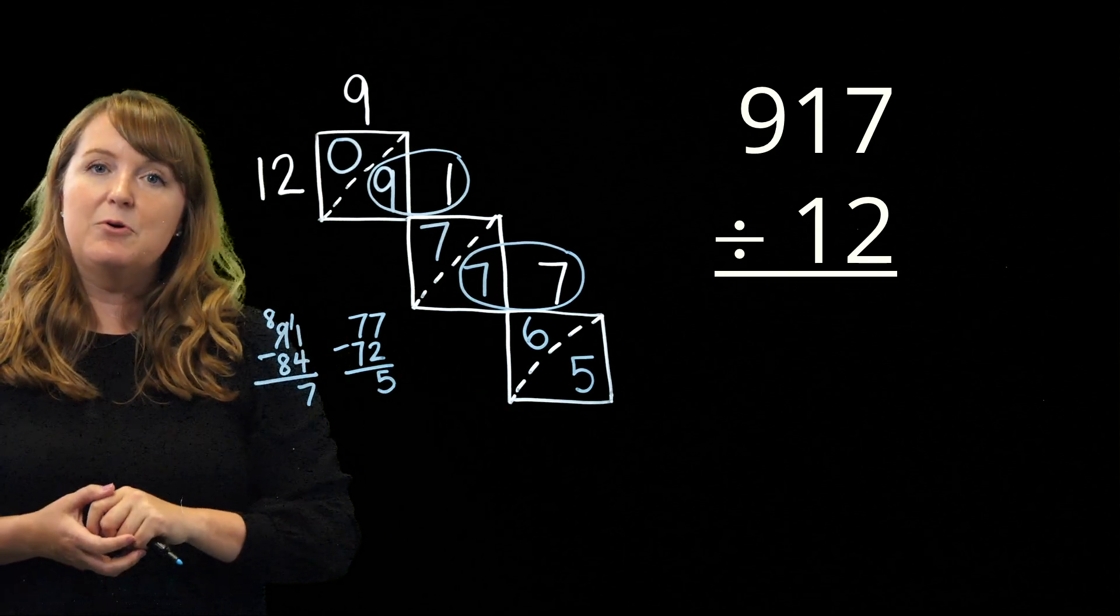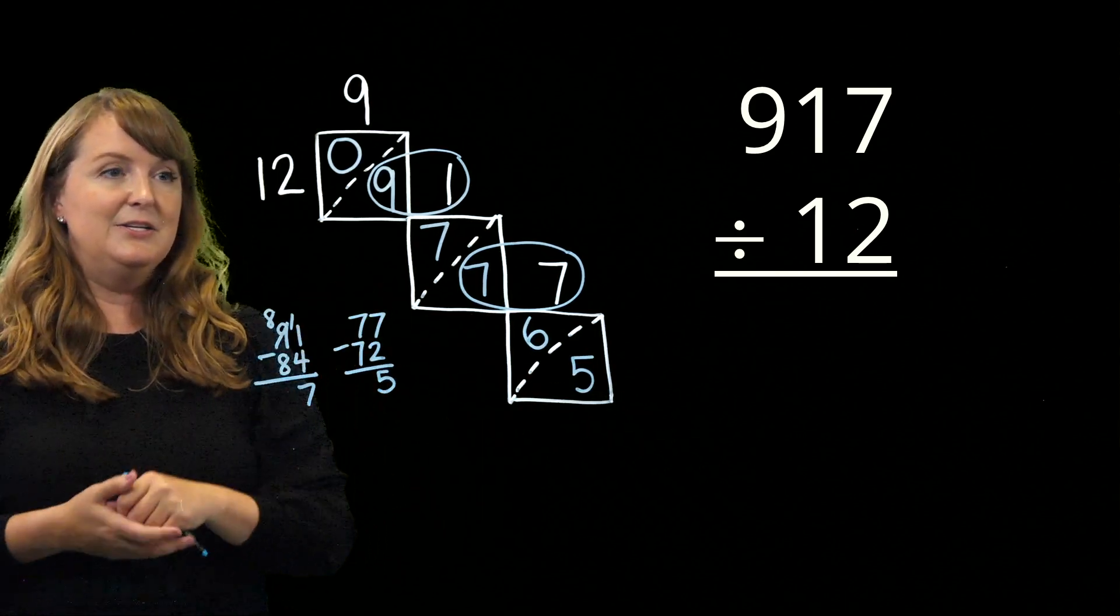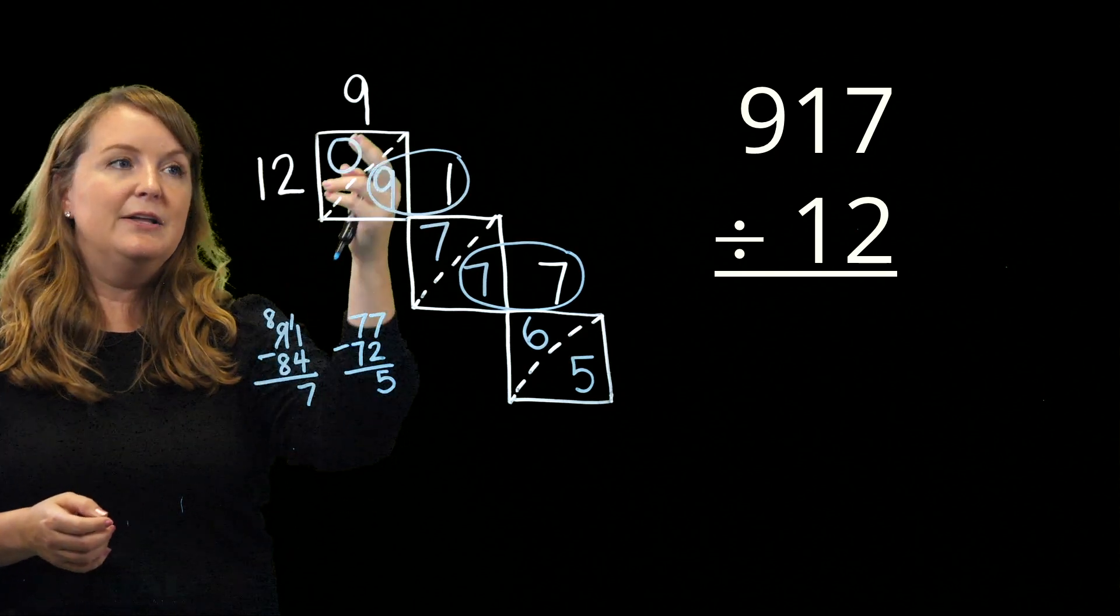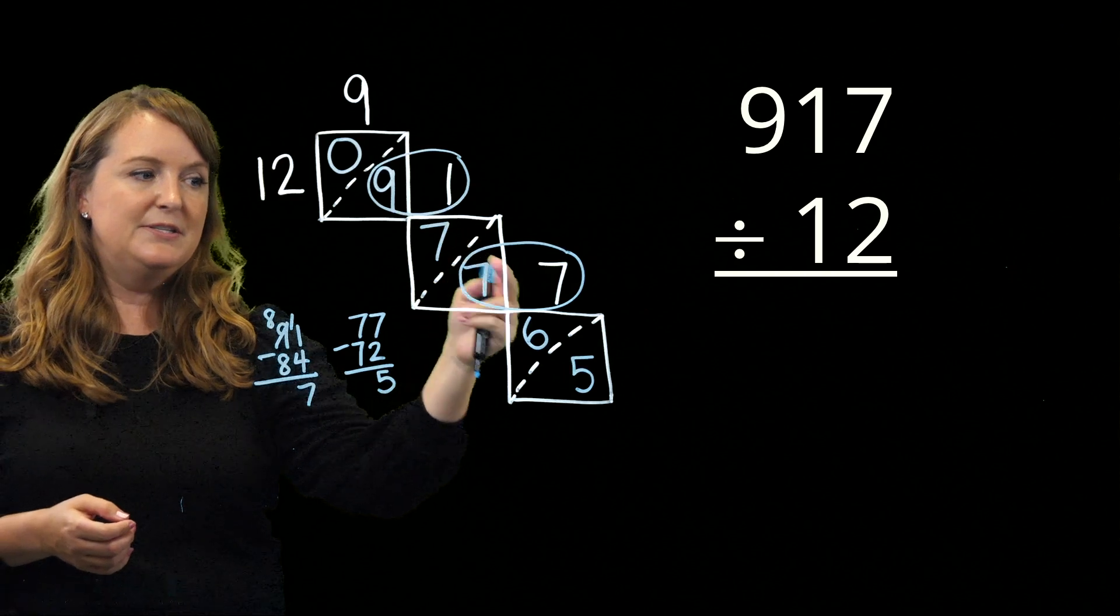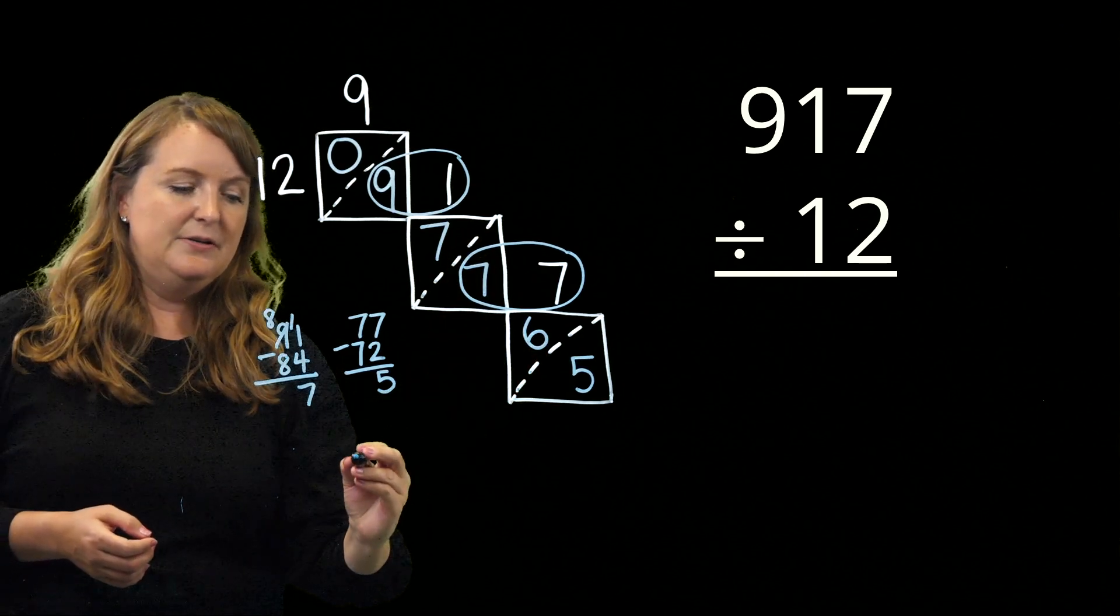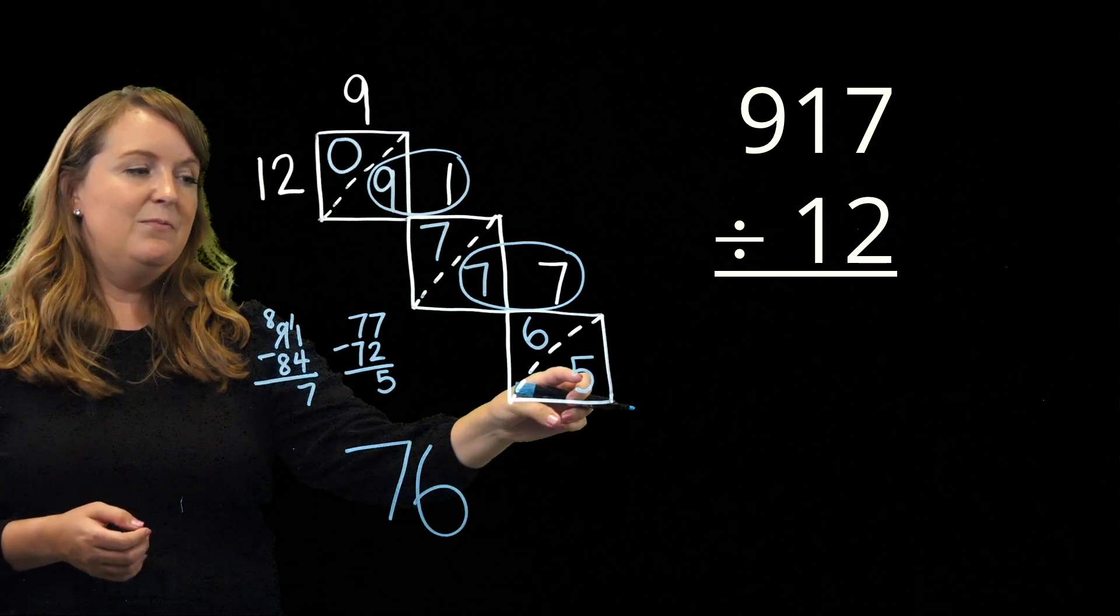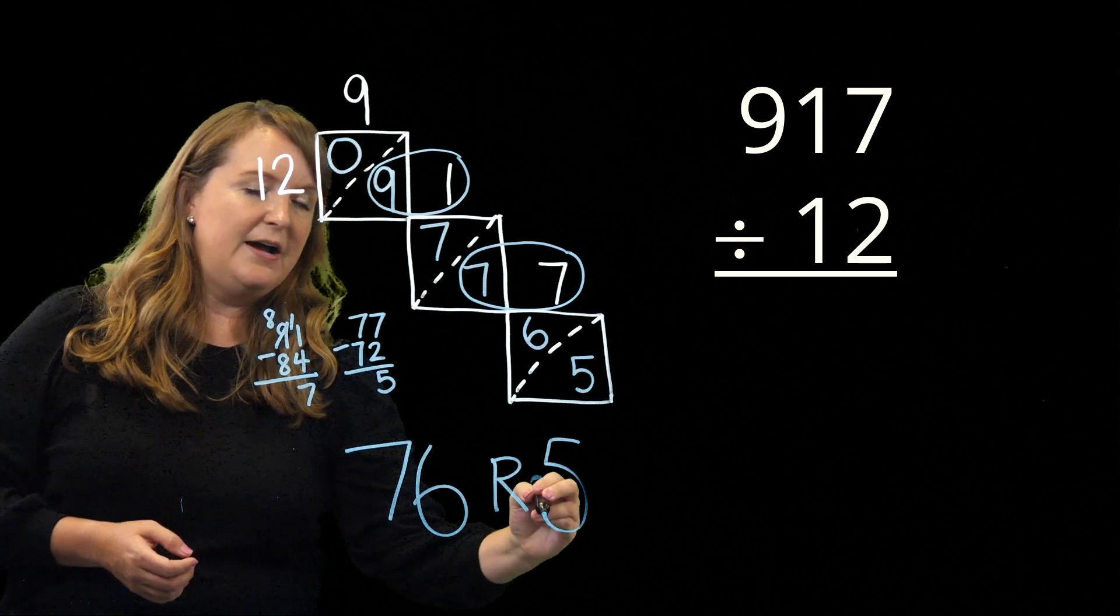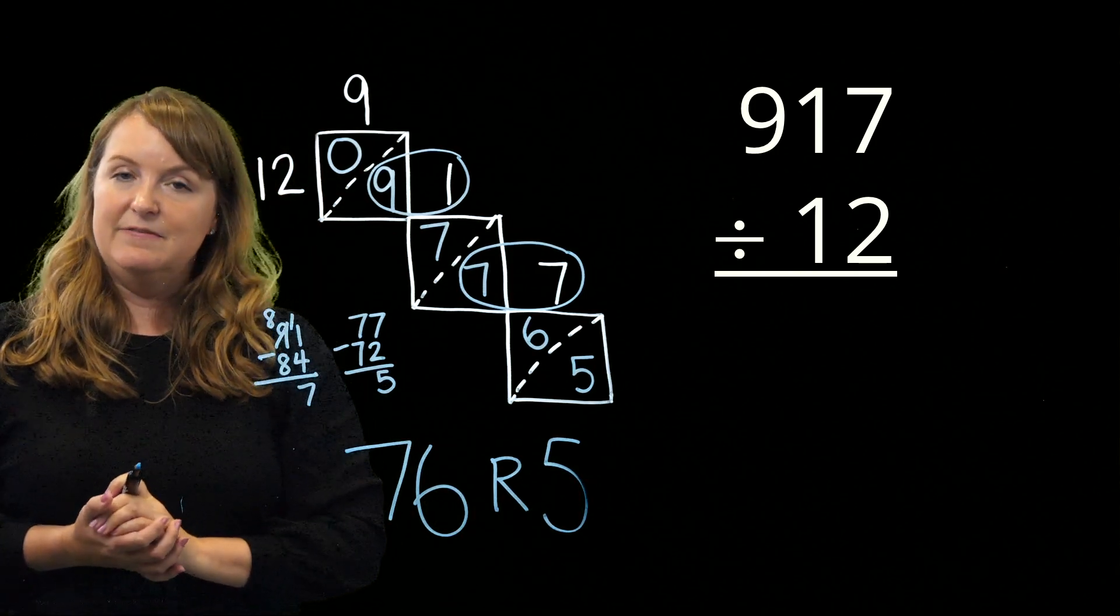917. Today in these problems, I am going to use remainders or else I could just keep going and get into decimals and fractions. But what I'm going to do is I'm going to look at the top part of each of the lattices. I see 0, 7, 6. So that gives me 76. And then what's my remainder right here? A remainder of 5. So when I have 917 and I divide that by 12, my quotient is 76 remainder 5.